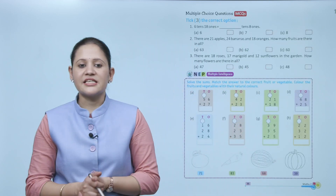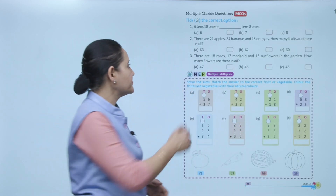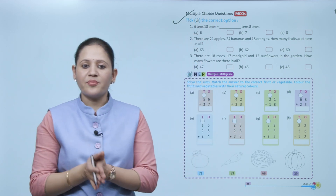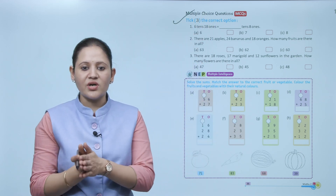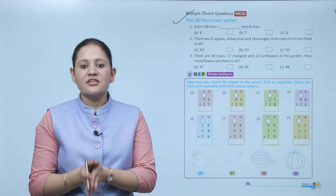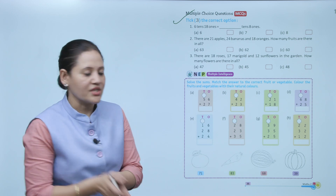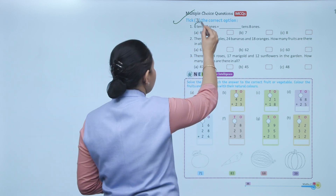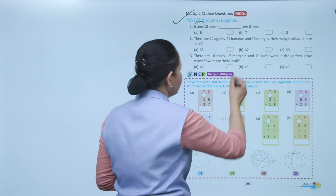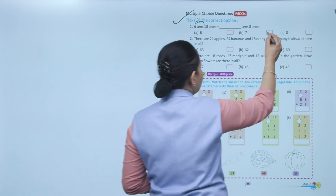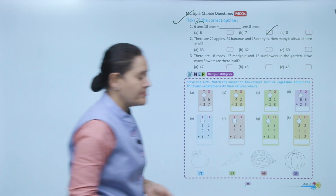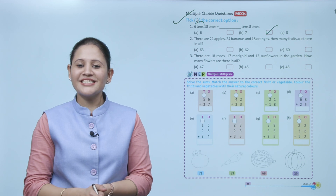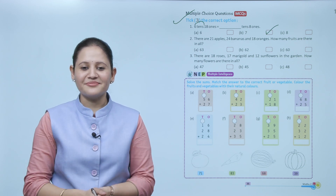Multiple choice questions: Take the correct option. 6 tens and 18 ones — the extra 10 from 18 ones is regrouped, giving 7 tens and 8 ones. That is the correct option. Here we end the chapter. I hope you understood it well. Now you have to practice it.